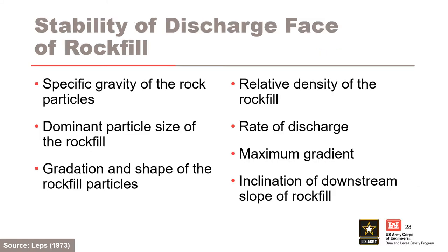Stability of the discharge phase of an unreinforced rock fill slope depends in varying degree on these characteristics, listed in order of increasing importance: the specific gravity of the rock particles, the dominant particle size of the rock fill, gradation and shape of the rock fill particles, the relative density of the rock fill, the rate of discharge, the maximum gradient, and the inclination of the downstream slope of the rock fill.